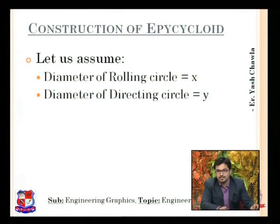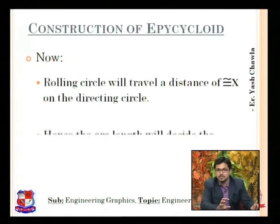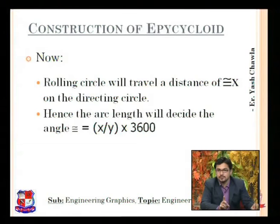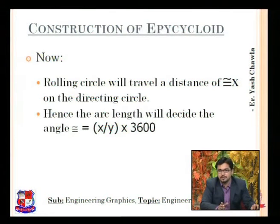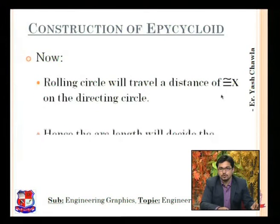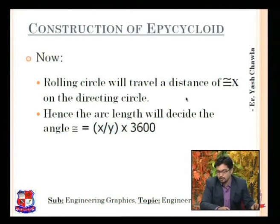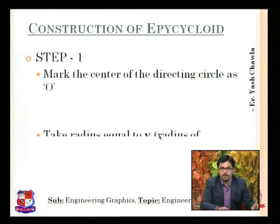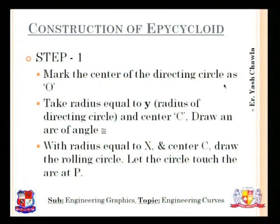Let us assume the diameter of the rolling circle is X and the diameter of the directing circle is Y. The rolling circle will travel a distance of π·X on the directing circle, which is the circumference. Hence the arc length will decide the angle, which will be equal to (X/Y) × 360°. X is the diameter of the rolling circle and Y is the diameter of the directing circle.